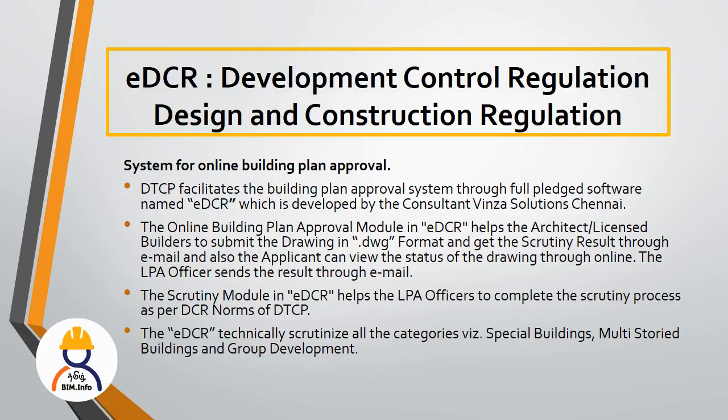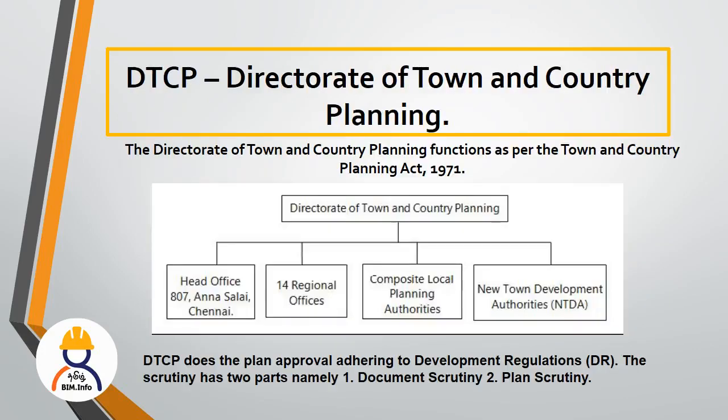Special and multistory buildings will have their software output placed in PDF format. Next is DTCP - the Directorate of Town and Country Planning. This is the same department established in 1971. The DTCP head office channel in Tamil Nadu is the LPA authority. There are two authorities: Composite Local Planning and New Town Development Authority.